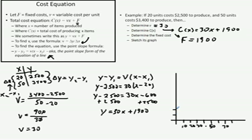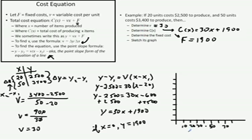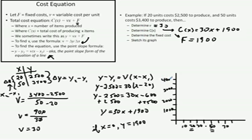On the vertical axis, we also need to choose numbers carefully since we're dealing with large values. When X equals 0, Y equals 1,900; when X equals 20, Y should be 2,500; and when X equals 50, Y should be 3,400. We'll go by 500s on the Y-axis: 1,000; 2,000; 3,000; and 4,000 at the top.